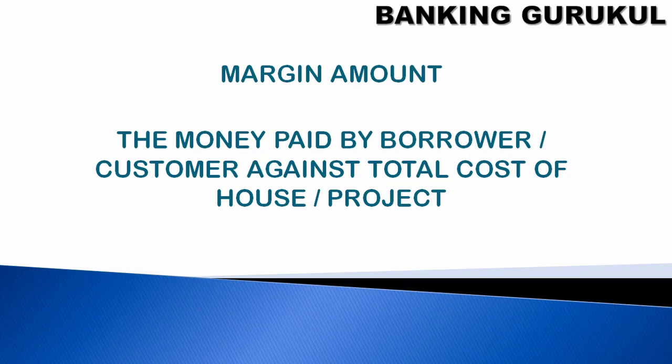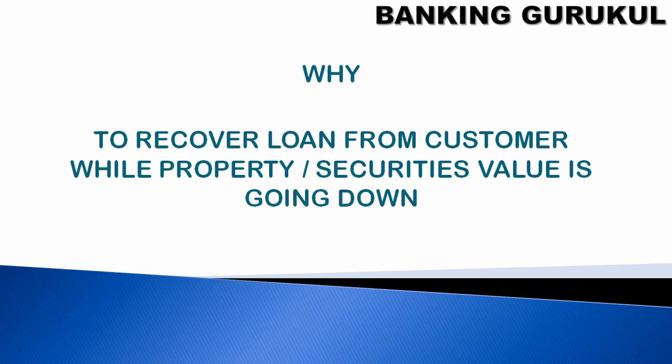So 80% the bank will give. 50 lakhs at 20% means 10 lakhs — you pay 10 lakhs, then the bank gives a loan of 40 lakhs. So 40 plus 10 you can buy your house or complete your house. This is called margin amount.